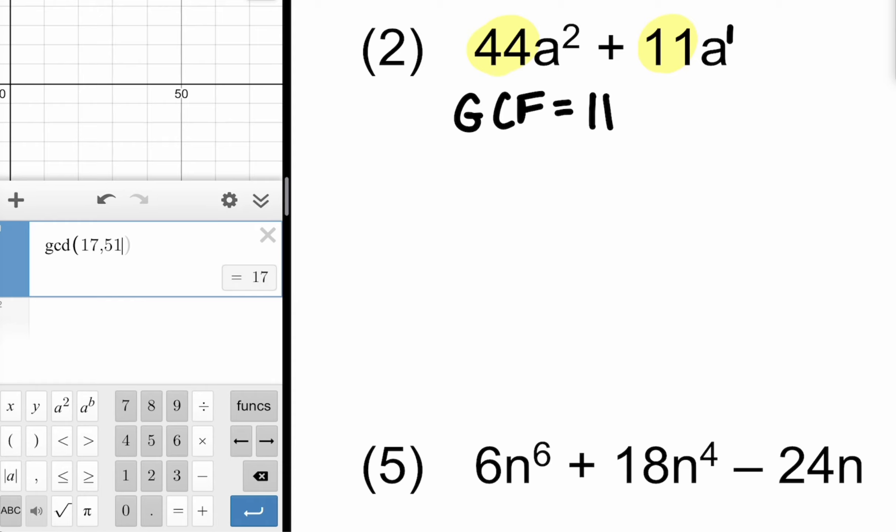Like for example, you're looking at number five right below on the big screen here. The smallest number in the set there is six. Check to see if that divides evenly into 18 and 24. It does. So you're good.